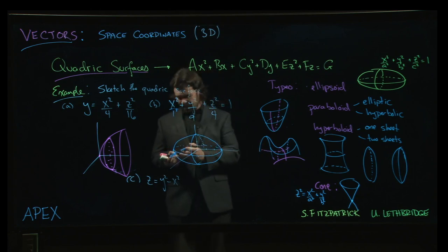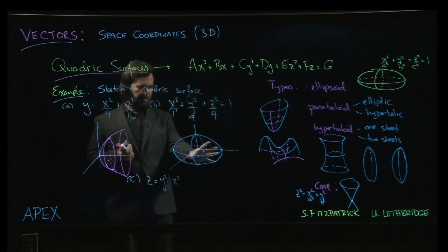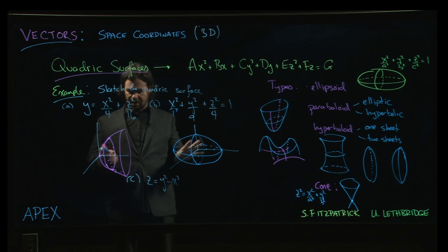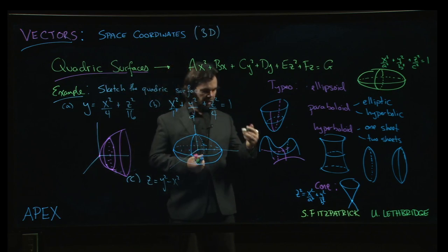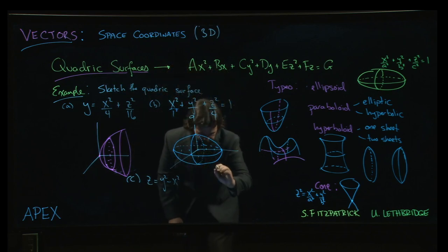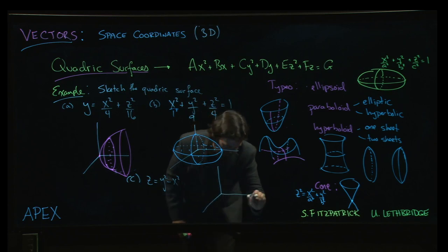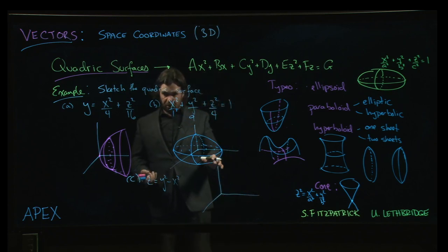So the ellipsoid, I think of the various quadric surfaces, I think the ellipsoid is possibly the easiest one to draw. This one, this is going to be a hyperbolic paraboloid. And I'm happy to admit that I find these by far the hardest ones to draw.